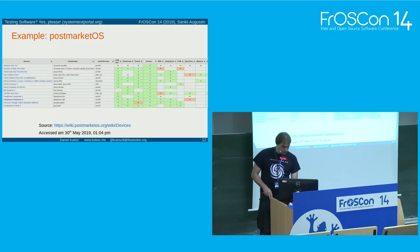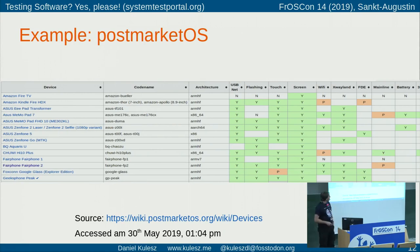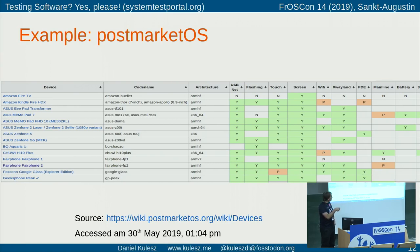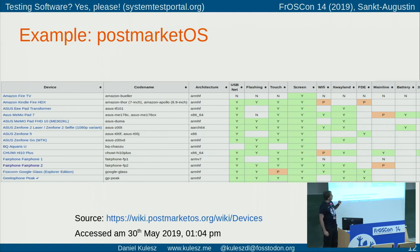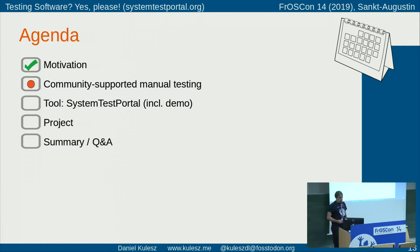Some projects try to concentrate this information in wikis or other documents. For instance PostmarketOS has a nice matrix in the wiki — you see the devices, some code names, and certain functions, and whether testing was successful, partially working, not working, or not supported. The interesting aspect is: how can you really manage all that information, and how can you find people to contribute to this matrix?